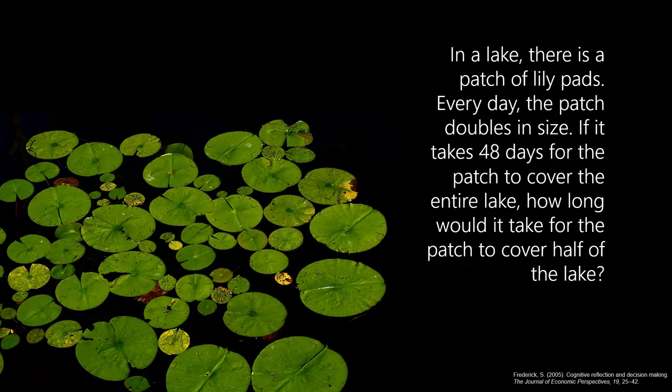In a lake there is a patch of lilies. Every day the patch doubles in size. If it takes 48 days for the patch to cover the entire lake, how long would it take for the patch to cover half the lake? The correct answer is 47 — it takes 47 days for the first half of the lake to be covered, and one day for the second half.